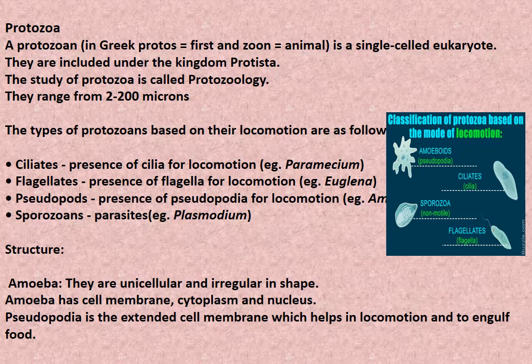A protozoan is a single-celled organism. They are included under the kingdom Protista. The study of protozoa is called protozoology. Types of protozoa based on locomotion: Ciliates — presence of cilia for locomotion, example Paramecium; Flagellates — presence of flagella for locomotion, example Euglena; Pseudopods — presence of pseudopodia for locomotion, example Amoeba; Sporozoans — parasitic, example Plasmodium.